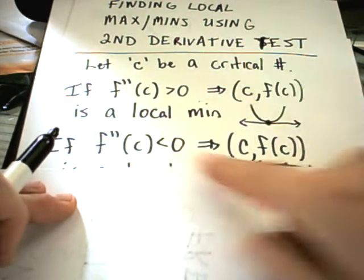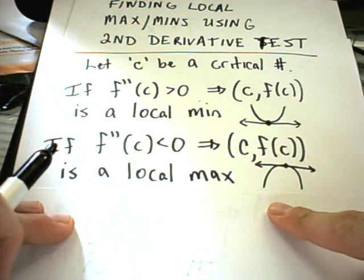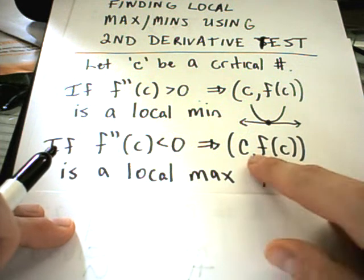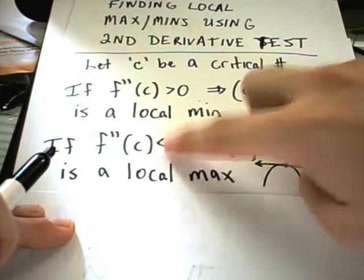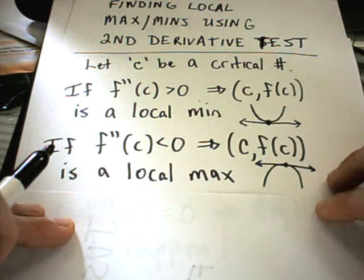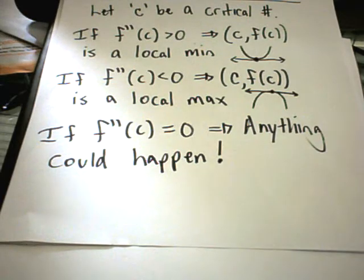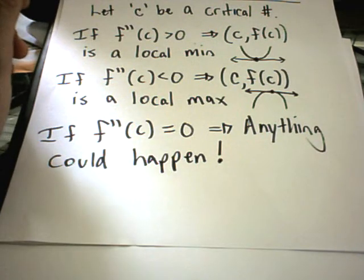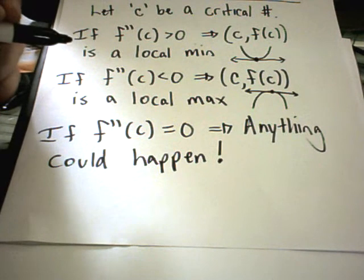Likewise, if the second derivative is negative, then that point is going to give you a local maximum. For the same reason, if the derivative is zero but it's concave down — that's what the second derivative being negative means — you will have a local maximum. And if the second derivative equals zero, anything could happen: you could have a local maximum, you could have a local minimum. In that case, to figure out your local maximums and minimums, you would just have to go back and use the first derivative test.